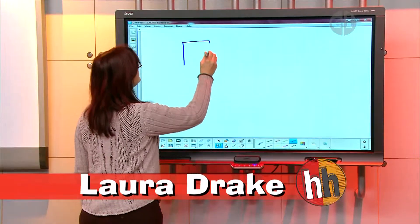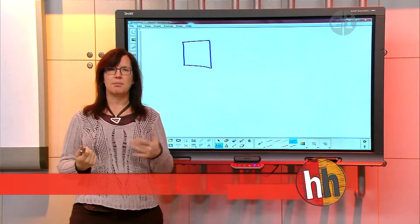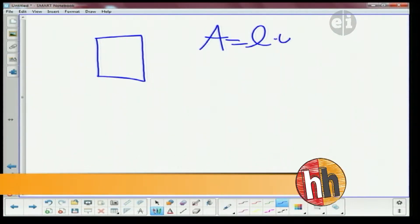I'm going to draw a square, and the one thing that we do know about a square is that all sides are the same. If you're going to find the area of the square, it's the same as the rectangle—you're going to multiply the length times the width.